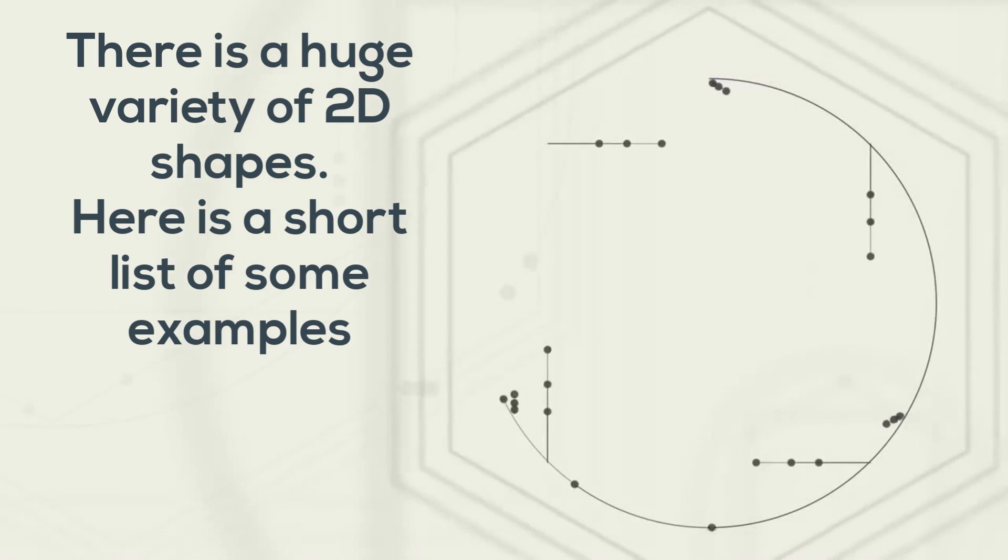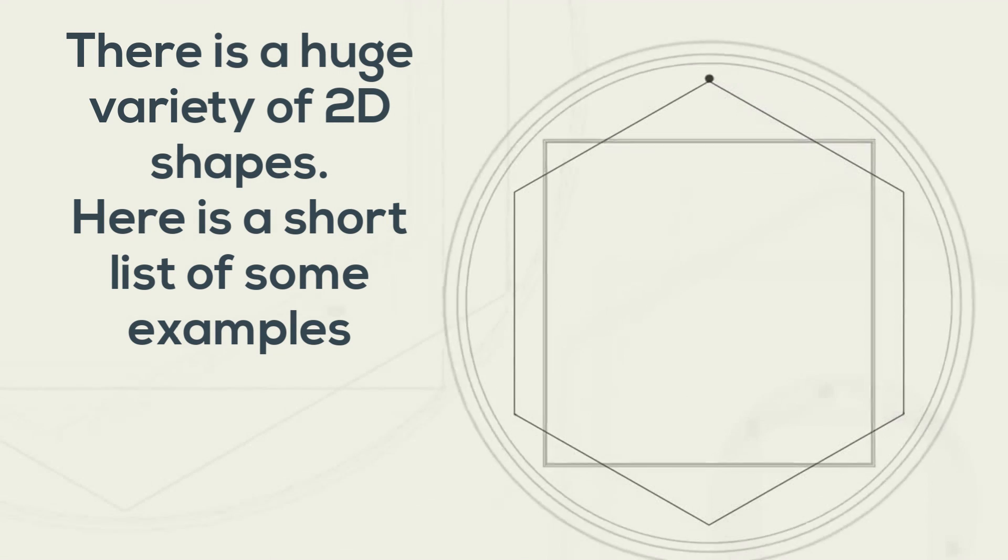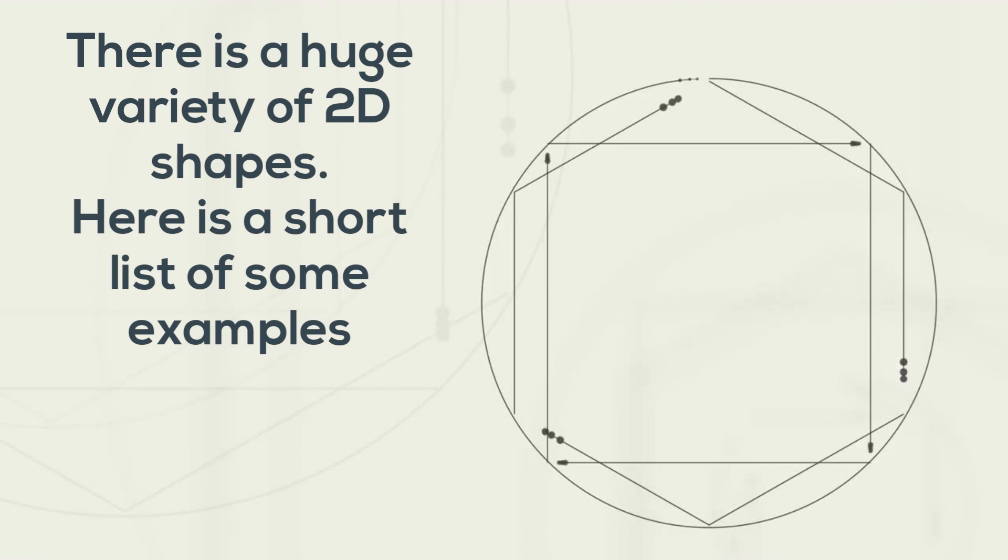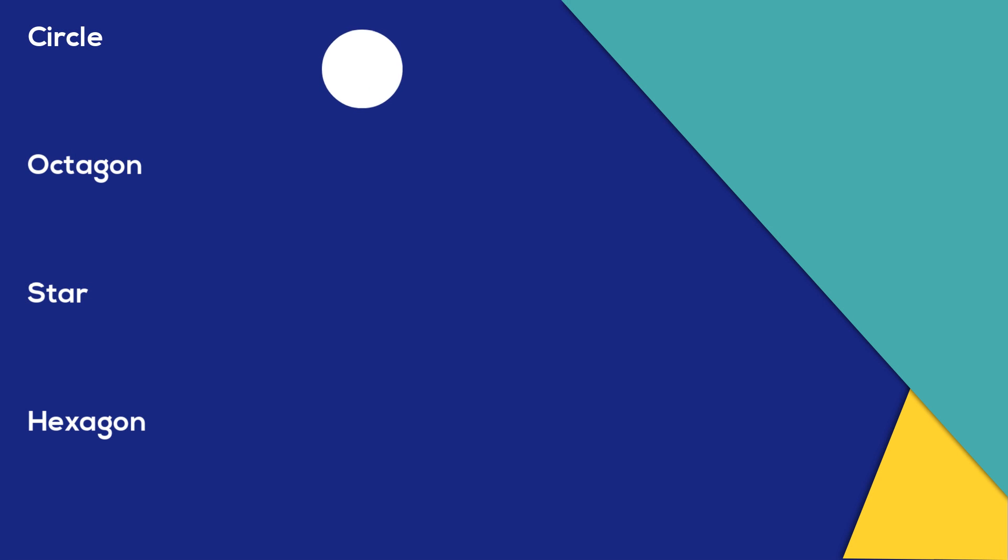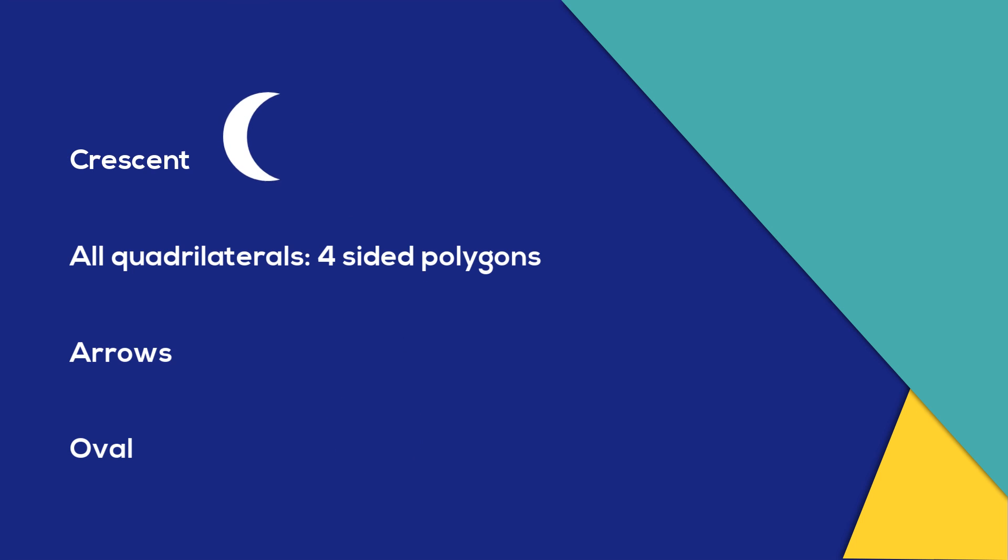There is a huge variety of 2D shapes. Here is a short list of some examples. A circle, an octagon, a star, a hexagon, a crescent, all quadrilaterals which is a four sided polygon, arrows, and an oval.